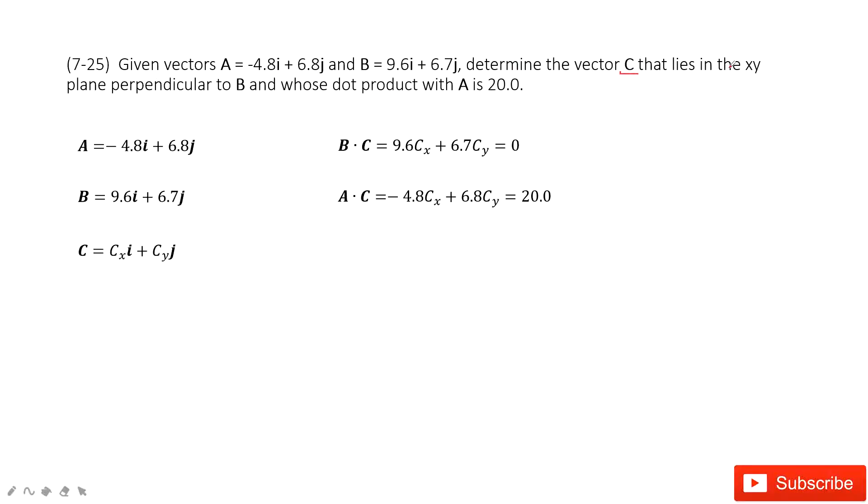So what's the requirement? It says C is on the xy plane. That means C must have the i component and j component. So we see this is the cx component and cy component, right? We need to find cx and cy.